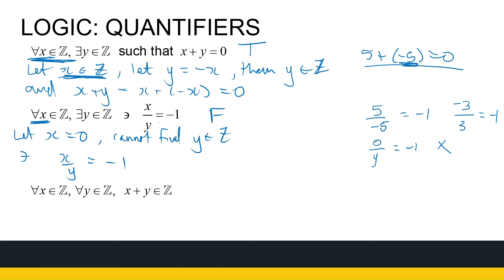The next statement: for all integers x and for all integers y, x plus y is an integer. This is actually a property of integers — integers are closed under addition. For every two integers, if I add them, I get an integer again. This statement is true.